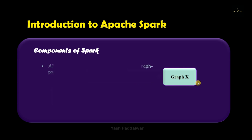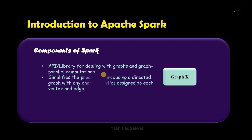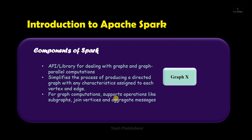The last component of Spark is GraphX, which is an API or library for dealing with graphs and graph-parallel computations. A graph contains two things: edges and nodes — the node stores the data and the edges define the relationship between nodes. GraphX facilitates creating a directed graph with all important properties attached to each node and edge. For computation and processing it supports different operations such as subgraphs, join vertices, and aggregate messages.